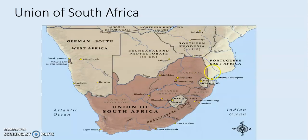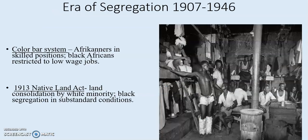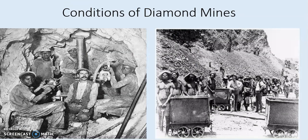Now you have the unification of South Africa — Transvaal, the Orange Free State, Cape Colony, Natal, and everything else. Then you have the era of segregation. It's not called apartheid yet, but you begin to see the creation of the color bar system where Afrikaners begin to hold skilled positions. Great Britain allowed the Afrikaners a seat in the British Parliament and let them rule over South Africa as they saw fit, only to gain access to resources. Then in 1913, you had the Native Land Act, where land was consolidated by the white minority and Black people were segregated into substandard conditions. Black people were mostly laborers while Afrikaners controlled the diamond and gold mines.